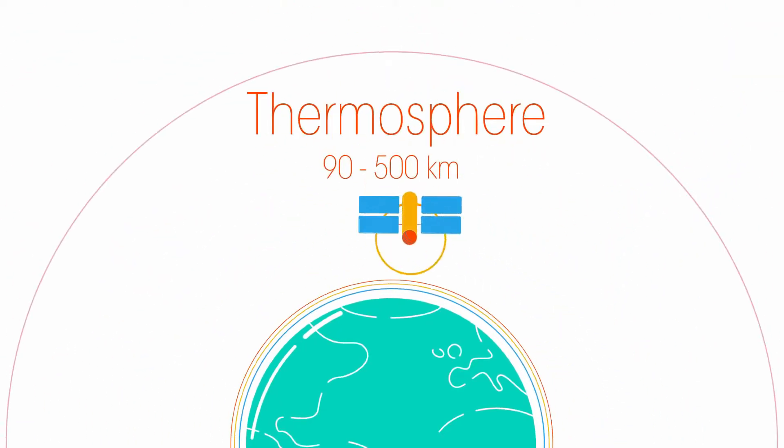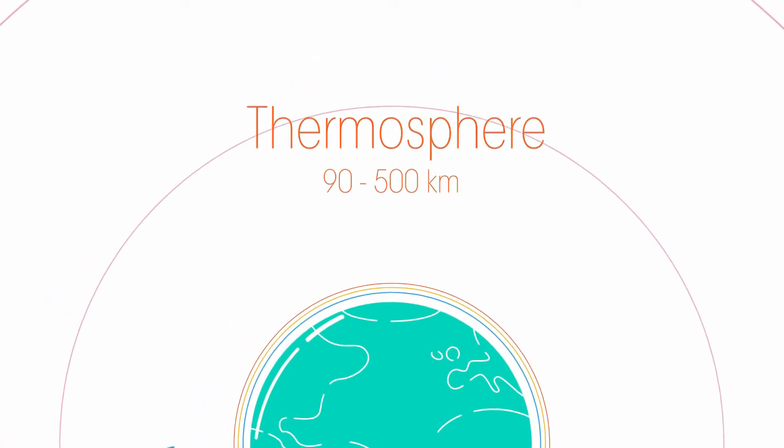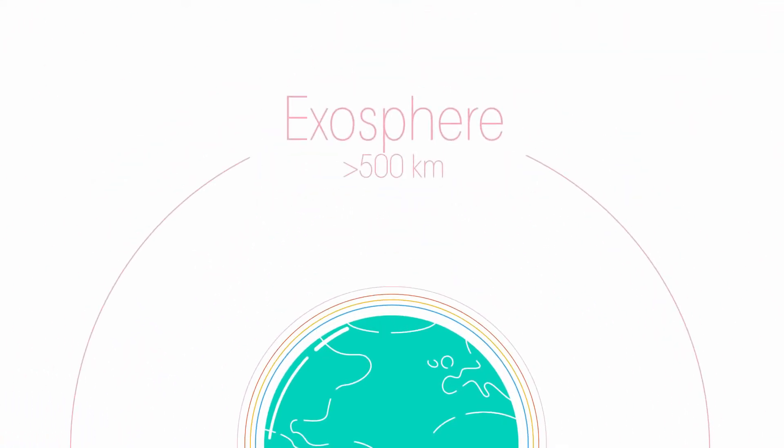Then there's the thermosphere. The International Space Station orbits the Earth at 400 kilometres. And then the exosphere is where our atmosphere merges into outer space.